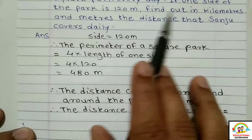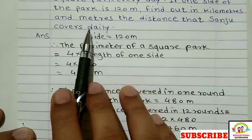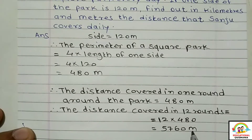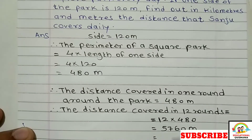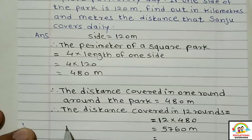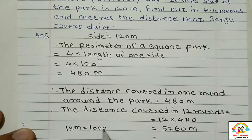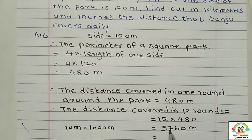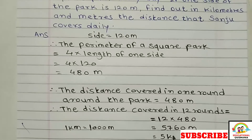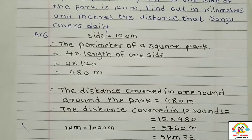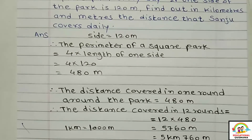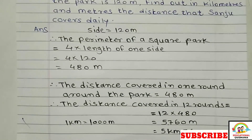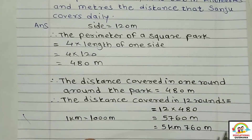The question asks: find out in kilometers and meters the distance that Sanju covers daily. The answer is in meters, so we need to convert to kilometers and meters. We know 1 kilometer is equal to 1,000 meters. So, 5,760 meters means 5 kilometers and 760 meters. Therefore, the answer is 5 kilometers 760 meters.